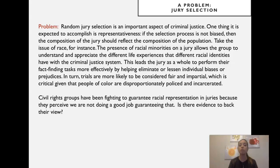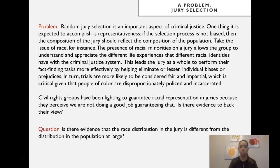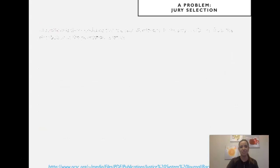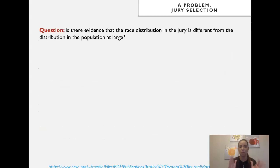This is critical given that people of color are disproportionately policed and incarcerated. Civil rights groups have been fighting to guarantee racial representation on juries because they perceive that we are not doing a good job of guaranteeing that. The question we're trying to address: is there evidence that the race distribution in the jury is different from the distribution of races in the population at large?